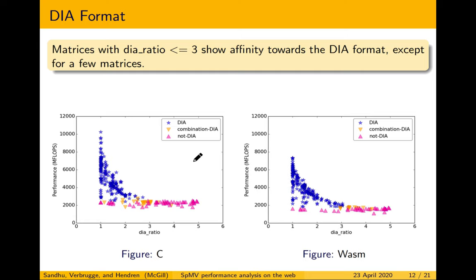We found that matrices with a DIA ratio less than 3 in both C and WebAssembly show affinity towards DIA format, except for a few very small matrices. We also found that when the DIA ratio is 1, the performance differs greatly within DIA matrices — this is the type of question we answer in research question 2. Additionally, WebAssembly performance is lower than C performance because GCC uses memory addressing modes while V8 uses registers, leading to more load/store operations, higher register pressure, and performance degradation.